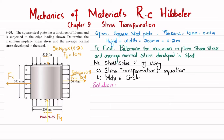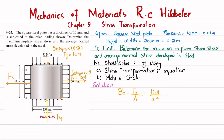Now we find σx, which equals Fx divided by the area. Fx is 10 Newton. The area is thickness × height = 0.01 m × 0.2 m. Solving this gives 5000 Newton per meter squared, which is 5 kPa. This converts the point load into normal stress in the x-direction.